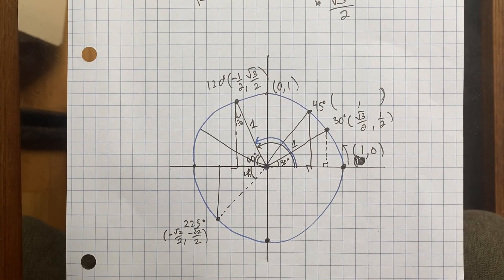Your job for today is simply to fill out the unit circle with all of the coordinates, including the ones at 90 degrees, 180 degrees, and 270 degrees. Good luck.